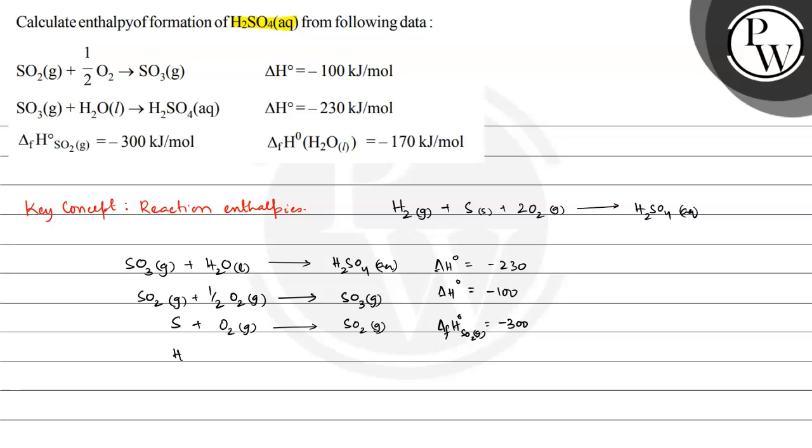We have H2 gas plus half O2 gas giving H2O liquid. The formation enthalpy here, delta FH0 of H2O liquid, is equal to minus 170 kJ per mole.